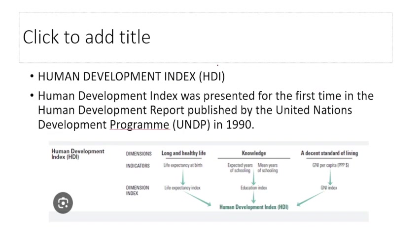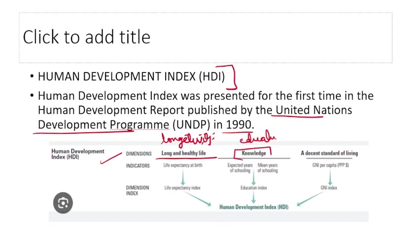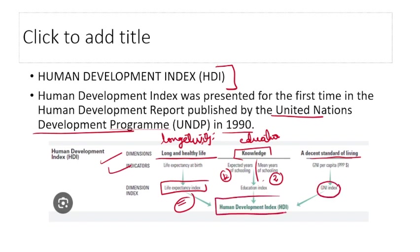Human Development Index (HDI) is very important. It was first published by the United Nations Development Programme (UNDP) in 1990. Its dimensions are: long and healthy life (longevity), education, and decent standard of living. Indicators include a life expectancy index, an education index (comprising expected years of schooling and mean years of schooling), and a GNI index for standard of living — together forming the HDI.